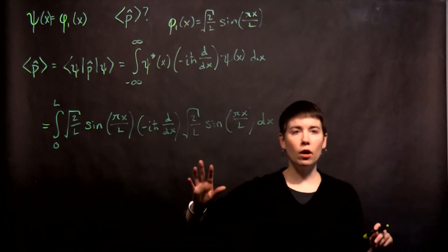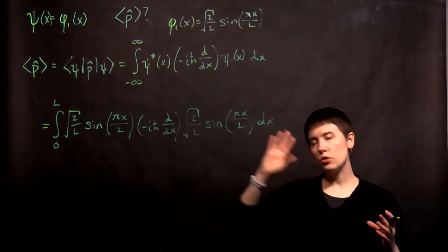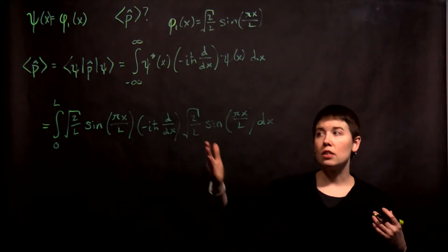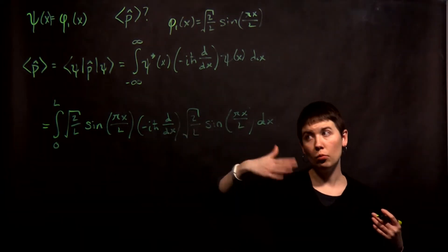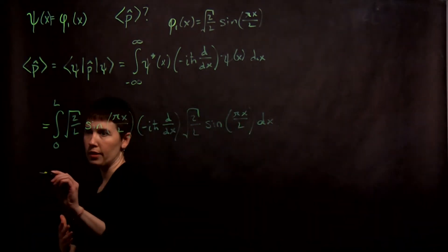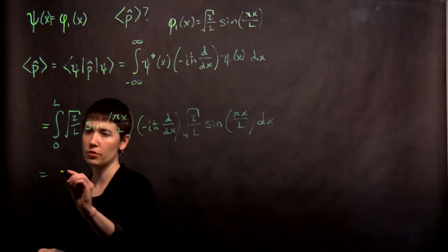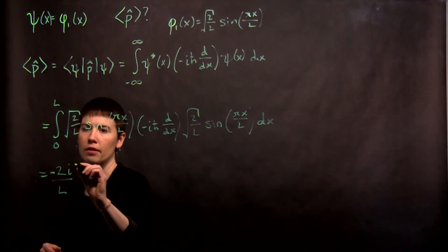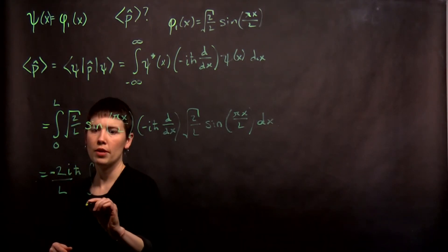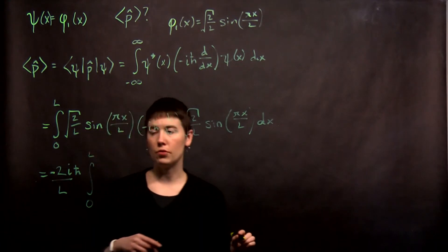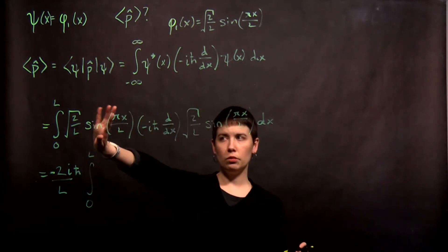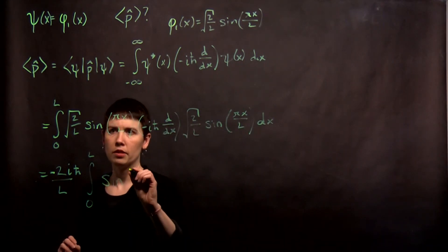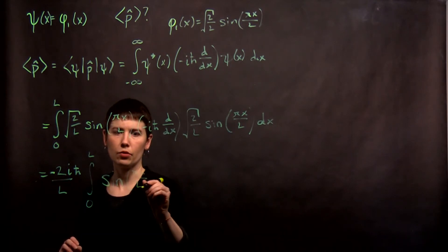So now anything that is a scalar, we can just pull out in front of the integral itself. And we then can take our operator and act on what's to the right. We have square root of 2 over L, square root of 2 over L, so that's going to become 2 over L. And then I'm also going to pull out this negative i h bar. So now I have my integral of 0 to L. Sine pi x over L, that's to the left of this, so we don't have to do anything with that. That's just going to stay there for now.